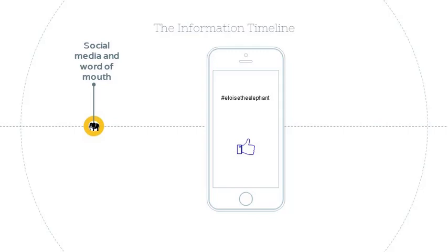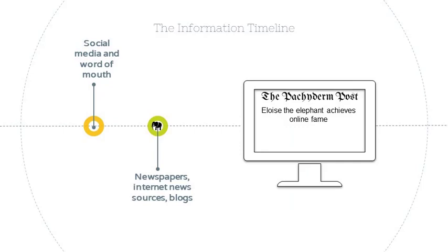Immediately, the zoo's social media accounts start to post about Eloise, and she's a hit. Before long, she has hundreds, and then thousands of followers. Within a day or two, local newspapers pick up her story, then national ones. Internet news sources and blogs might also report the story at this point. These sources do not take long to create and distribute, which is why we see and hear them first.